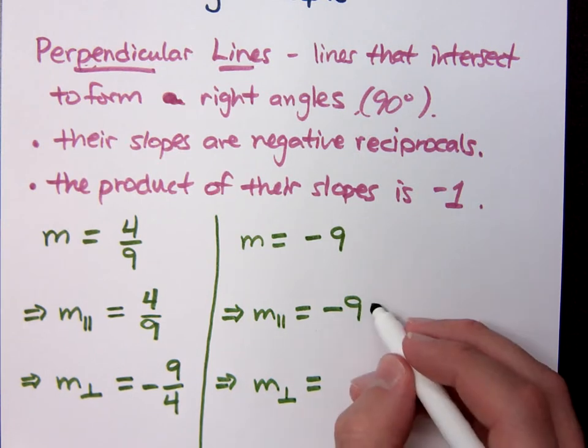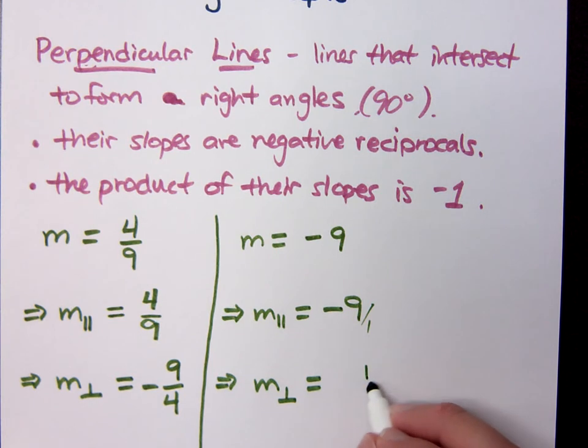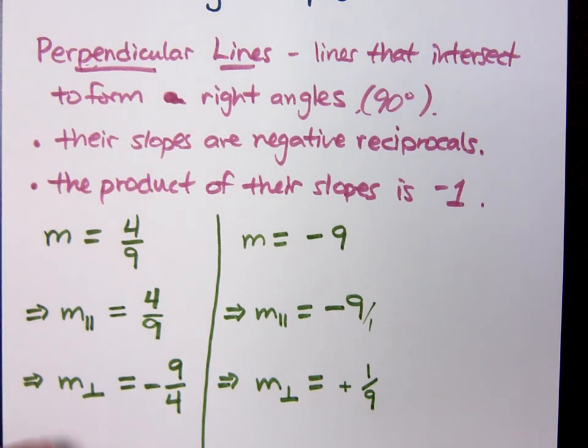This guy's understood to be over one. So if you flip that over, that's one over nine, and you change it from negative to a positive. So that's what your perpendicular slope would look like.